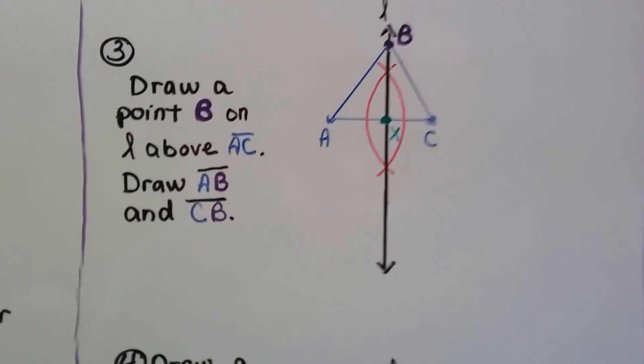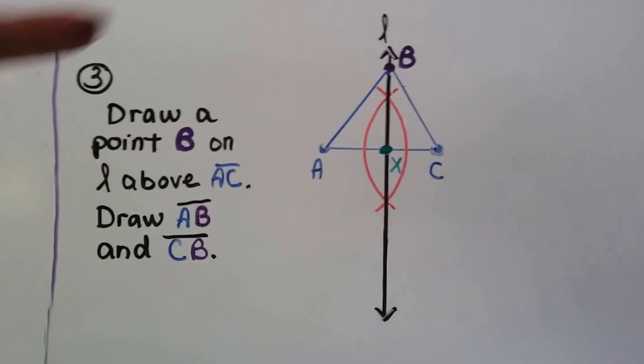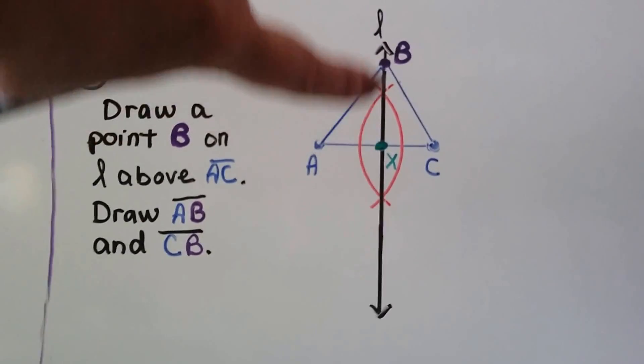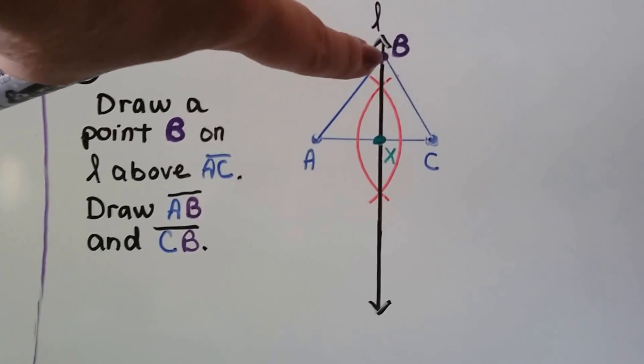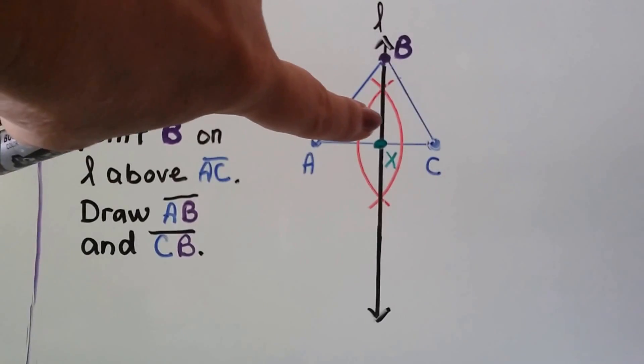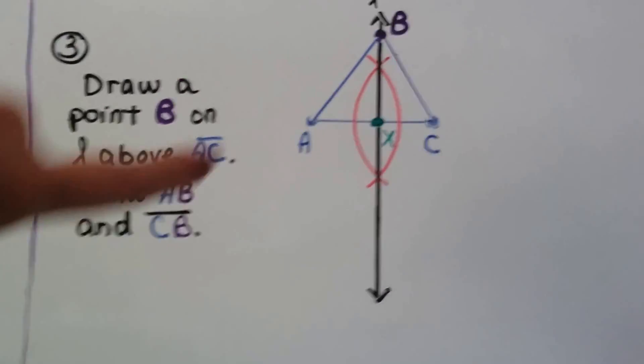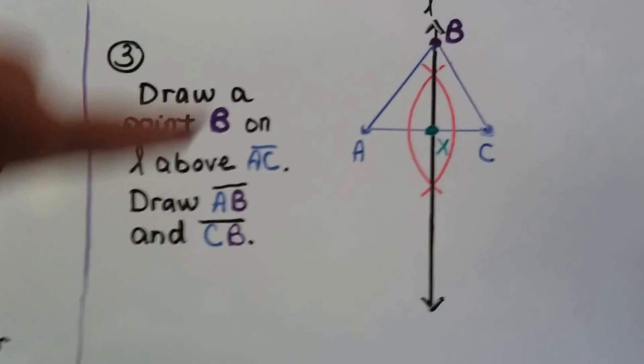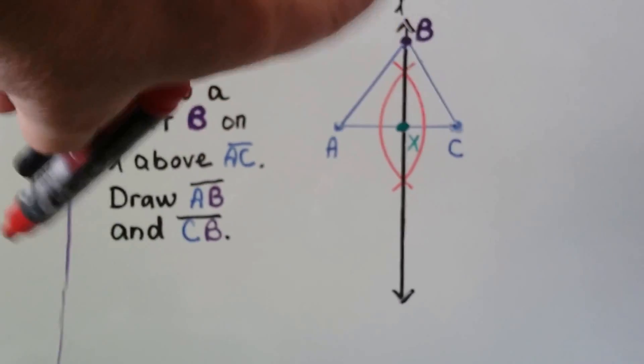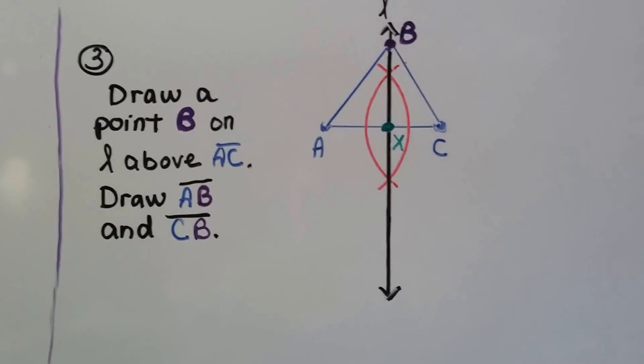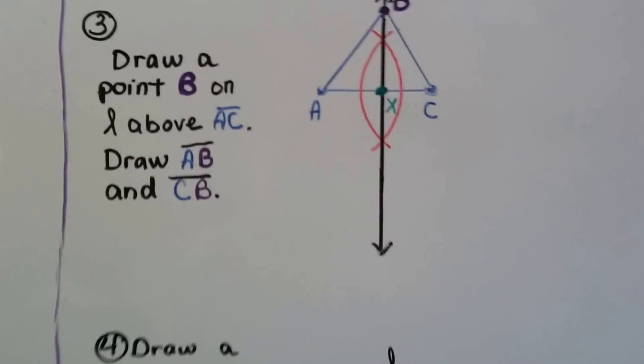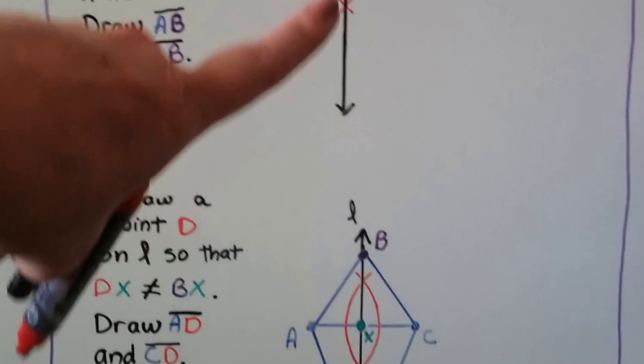The next thing I'm going to do is we're going to draw a point B somewhere above AC. I put mine here above this intersection, but you could even put it here if you wanted to, just as long as it's somewhere above AC. Then we're going to draw AB and CB. So you can probably figure out what's happening, right? So now, once we've got that, we are going to draw a point D.